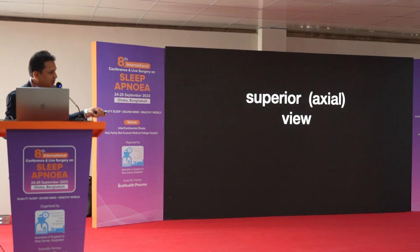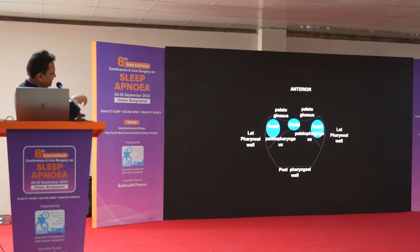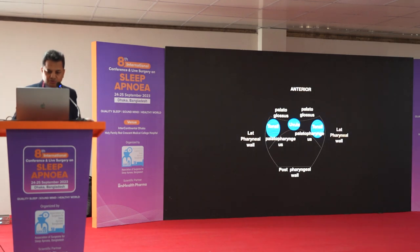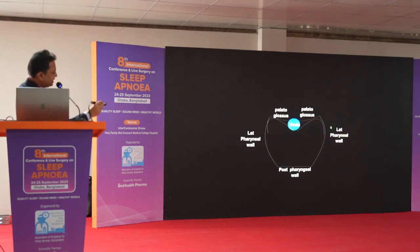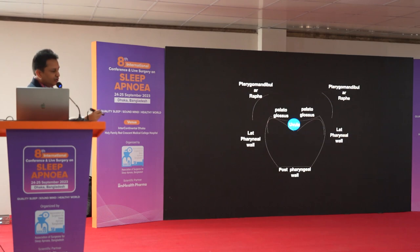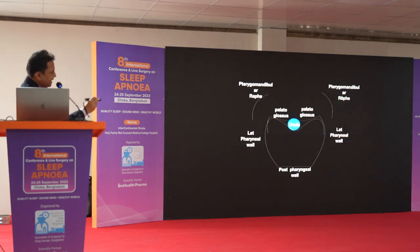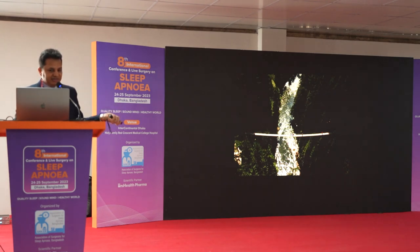Looking at the oral cavity from the superior angle — as we saw with how air enters — this is anterior, this is posterior, this is the tonsil, uvula, and palatopharyngeus. When we remove the tonsils, the palatopharyngeus will go forward. The anterior pharyngeal wall and lateral pharyngeal wall — the moment you remove the tonsils, the posterior pillar can go forward. We have the pterygomandibular raphe on each side, which is always anterior and lateral to the soft palate.